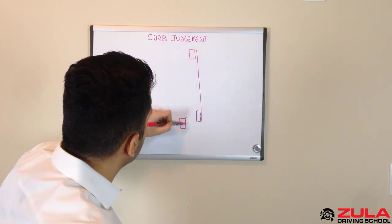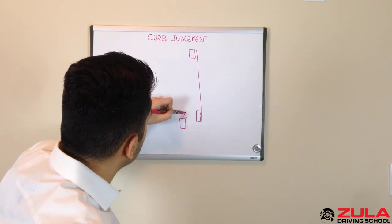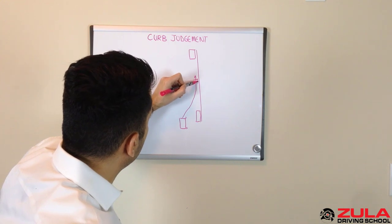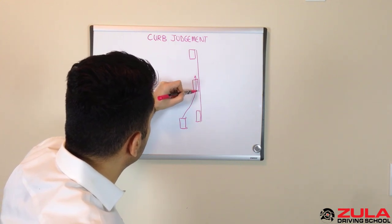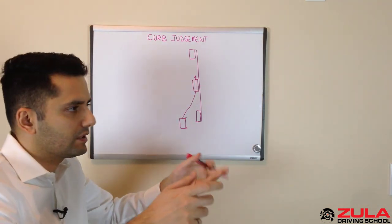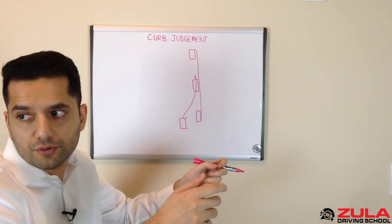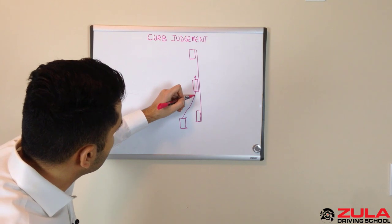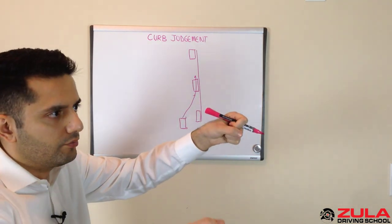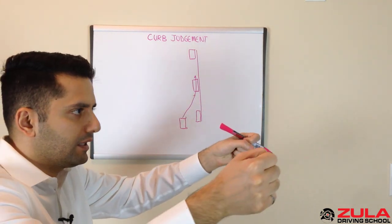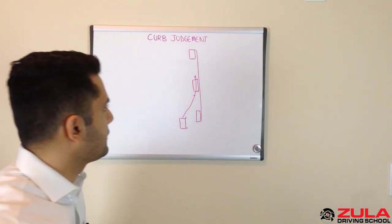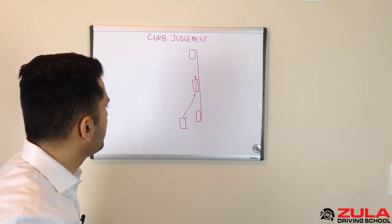So you've got your signal on and you come in to pull over. How do you know when you should stop going towards the curb? So your signal, mirror, mirror, shoulder check and it's clear and you move over. At this point, how do you know when you should bring it back to center? So that's what we're going to talk about now.